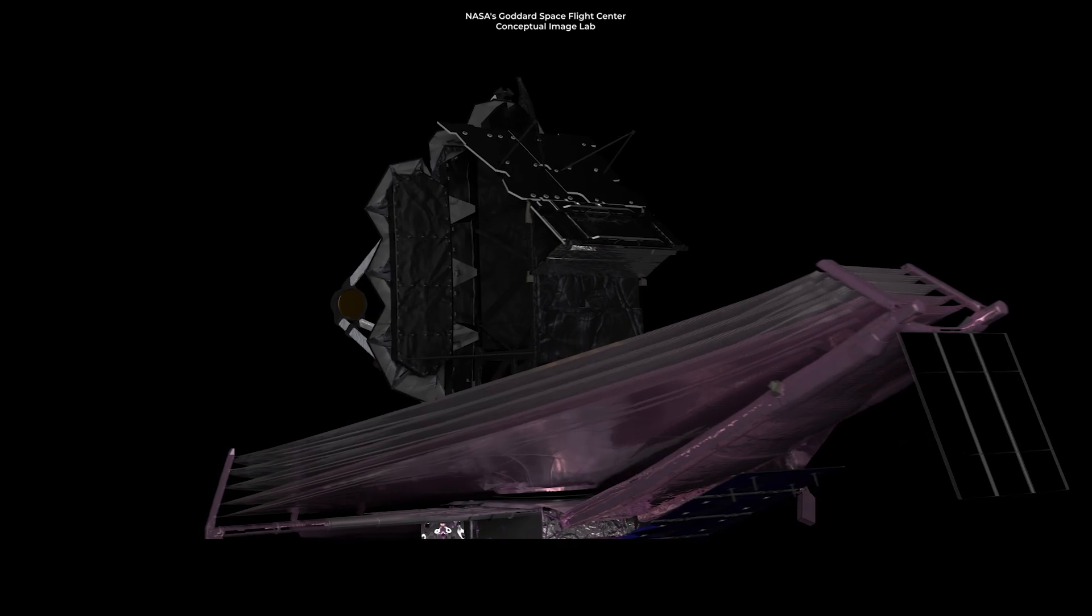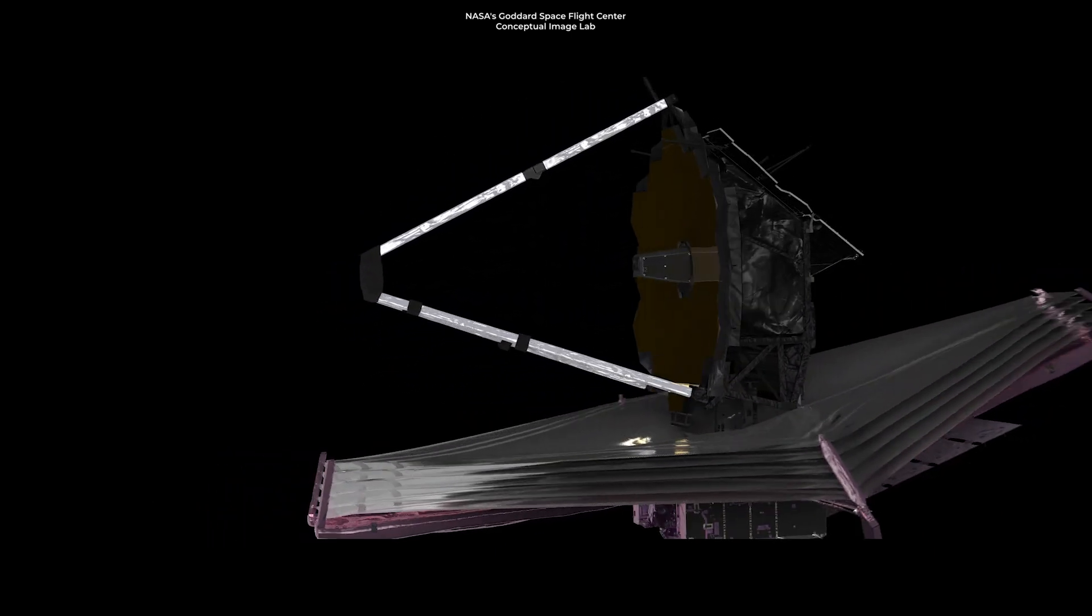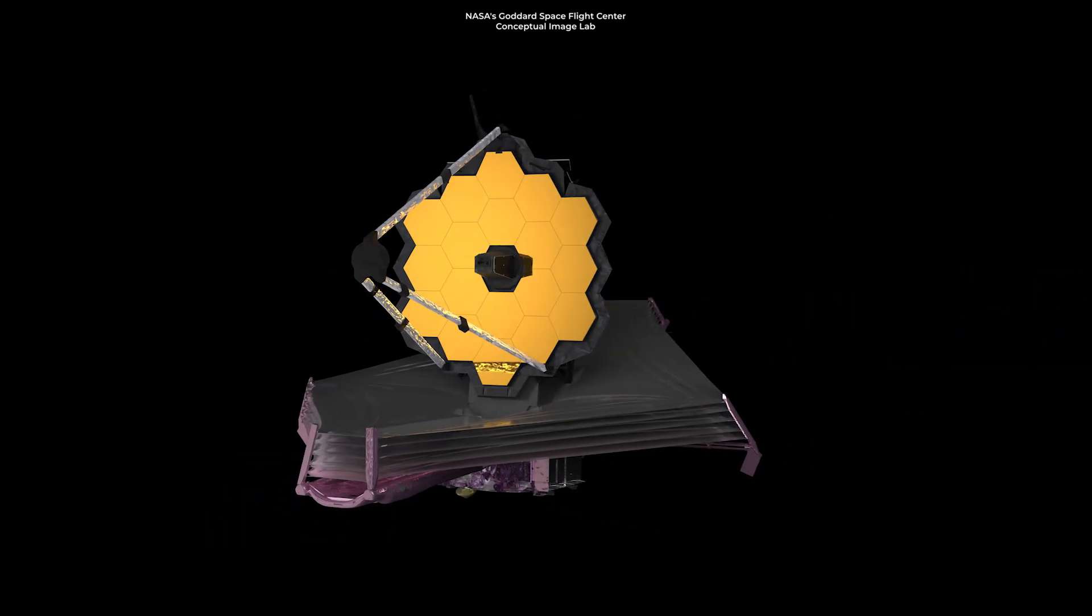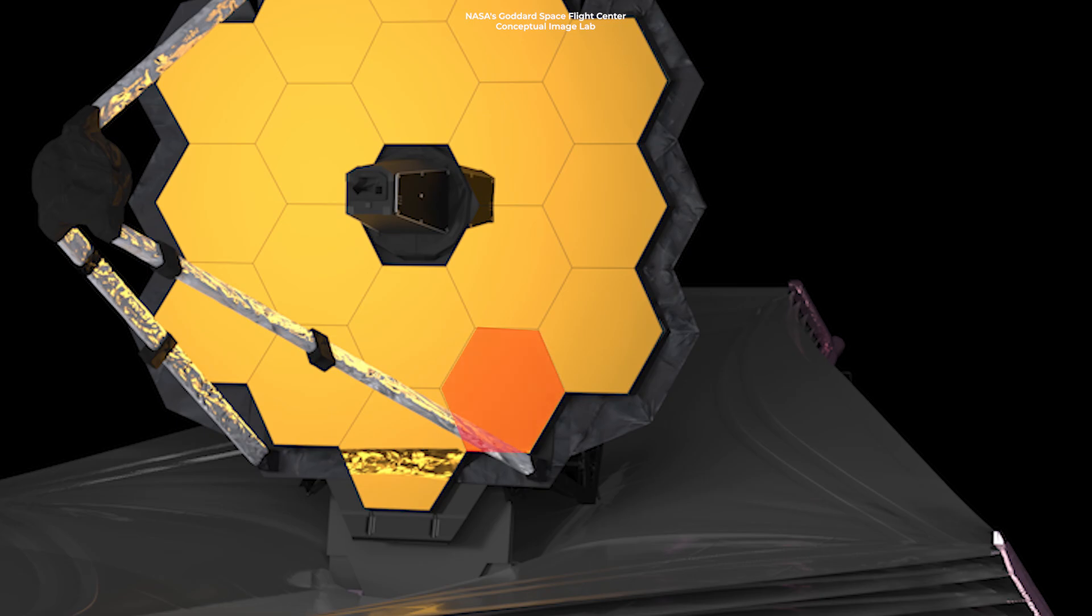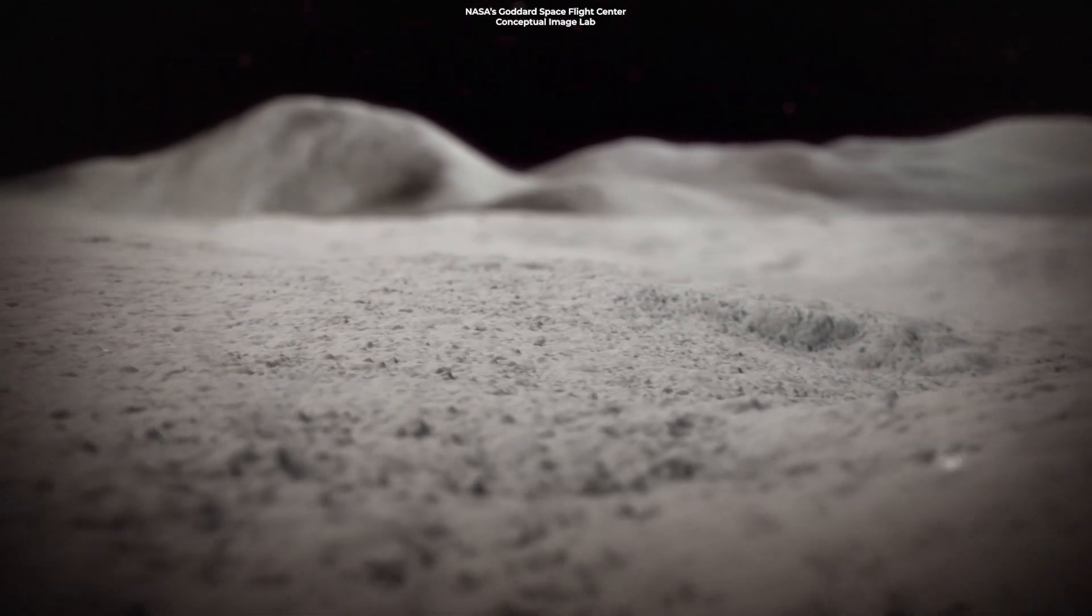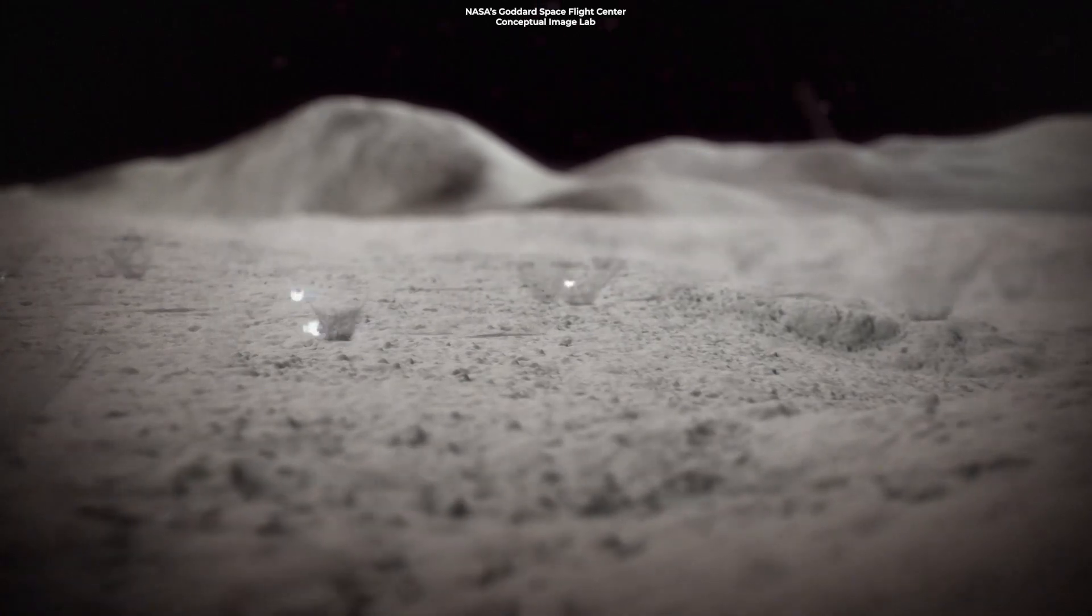Webb Telescope has been hit. Its primary mirror was damaged by six micrometeoroids, one of which left a significant mark. Scientists expect these tiny rocks to hit here and there, but this one turned out to be worse than first thought.